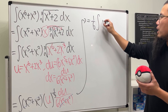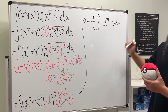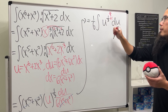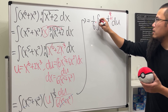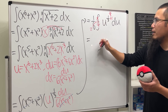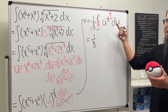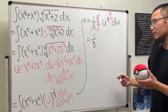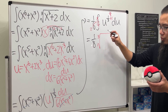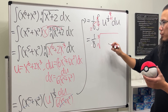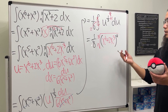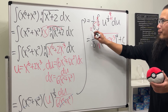Everything cancels, so we put one over six out front and integrate u to the one-third power. Adding one gives four-thirds, and dividing by four-thirds means multiplying by three-fourths. Reducing: two cancels, giving one over eight. Writing in radical form, the answer is one-eighth times the cube root of x to the sixth plus two x to the third, all raised to the fourth power, plus C.